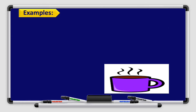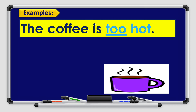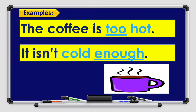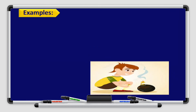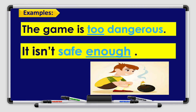Let's see further examples. The coffee is too hot — it isn't cold enough. Let's take a look at this picture and use both 'too' and 'enough.' The game is too dangerous — it isn't safe enough.